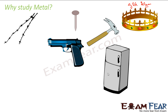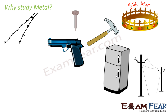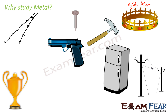Most electrical appliances are made of metals — the body of a fridge, for example. The wires that conduct and transmit electricity from a power station to our homes are also made of metals, because metal is a good conductor of electricity. Even trophies are normally made of metals.